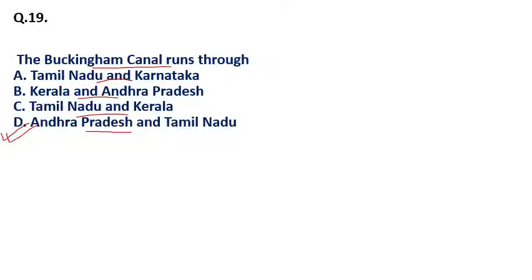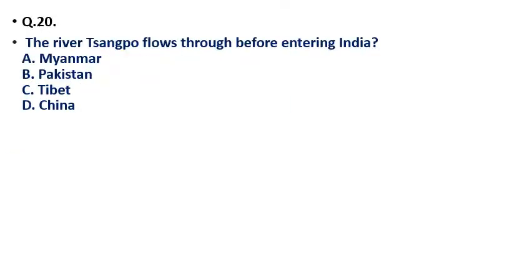Question 20: The river Sangpo flows through which country before entering India — (a) Myanmar, (b) Pakistan, (c) Tibet, (d) China? The correct answer is option C — Tibet. The river Sangpo flows through Tibet before entering India.